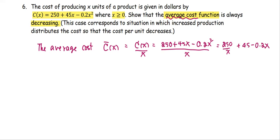We are going to show that the average cost function is decreasing. Decreasing here tells us the derivative of the average cost function is always less than 0.